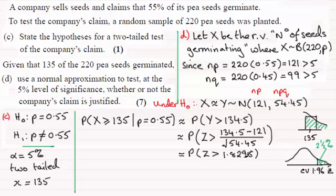So at this point here, you could say that the standardized Z value is 1.8295, which is less than 1.96. So therefore, not in the critical region, not significant. And therefore, we can accept the null hypothesis that the company's claim is justified. So that's one way, working with critical values.